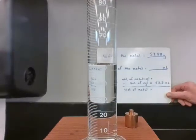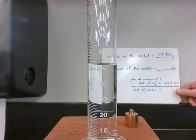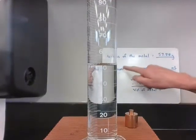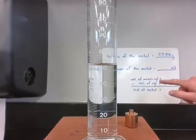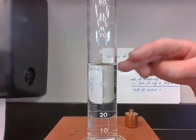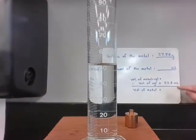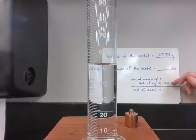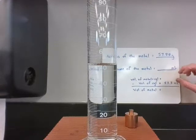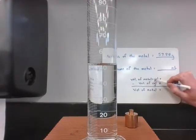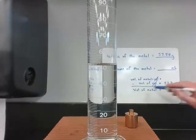I have a data table where I found the mass of the metal to be 57.88 grams. Now I need to find the volume of the metal. Since it's an irregular shape, I'll use water displacement. I just read the volume of the graduated cylinder at 53.3 milliliters. After I put the metal in, the volume will be higher. Subtracting will give me the volume of the metal.